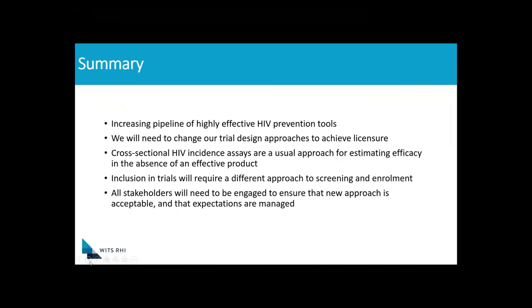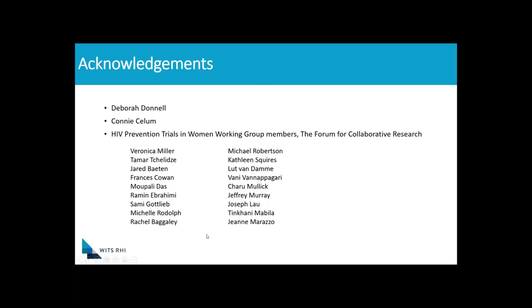In summary, we've been victims of our own success. We have an increasing pipeline of highly effective HIV prevention tools, and it's likely that we're going to have to change our trial design approaches if we want to license these new highly effective products. Cross-sectional HIV incidence assays are one way to include external controls for assessing HIV incidence, but they're going to require us to do our trials in a different way and to have a different approach to screening and enrollment. In order to be successful, we're going to have to make sure that all stakeholders are engaged and that their expectations are managed. I'd like to acknowledge my colleagues who provided input into this presentation and also the HIV prevention trials in women working group. Thank you very much.